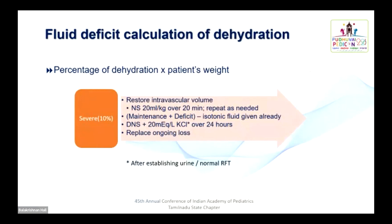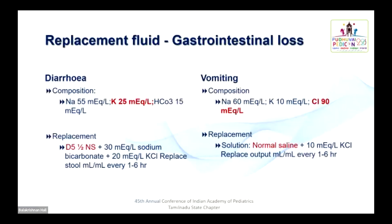For replacement fluids, fluid deficit is calculated by percentage of dehydration times patient's weight. Intravascular volume and shock should be treated with normal saline; maintenance and deficit fluid with DNS plus 20 mEq/L KCl once urine output is established. Replacement fluid should be matched to the electrolyte composition of the lost fluid. For diarrhea, where potassium loss is high, replace with D5 normal saline plus 30 mEq of sodium bicarbonate and 20 mEq of KCl, ml per ml, for the first 1–6 hours.